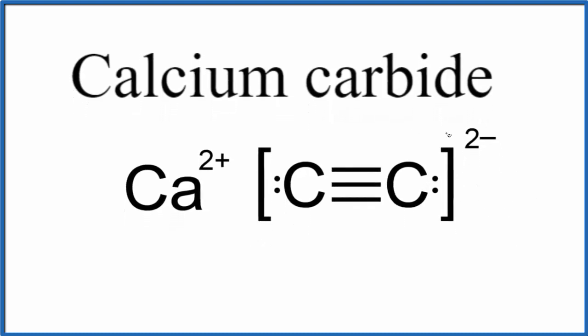So this is the structure for calcium carbide and the formula then would be CaC2. We have the calcium and the two carbon atoms together, calcium carbide.